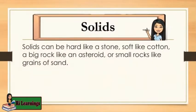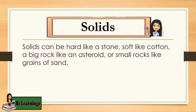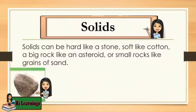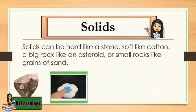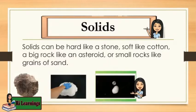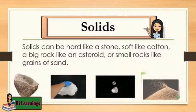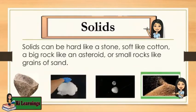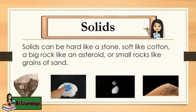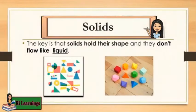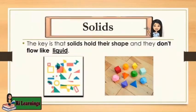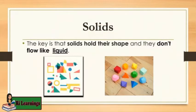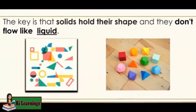Solids can be hard like a stone, soft like cotton, a big rock like an asteroid, or small rocks like grains of sand.